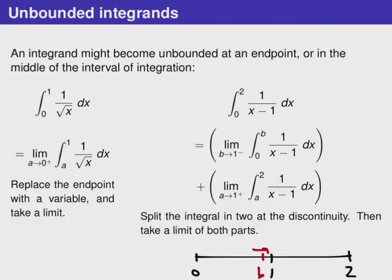For the second integral we have a somewhere between 1 and 2 and it's going to approach 1 from the right. So that's why we have a goes to 1 from the right.